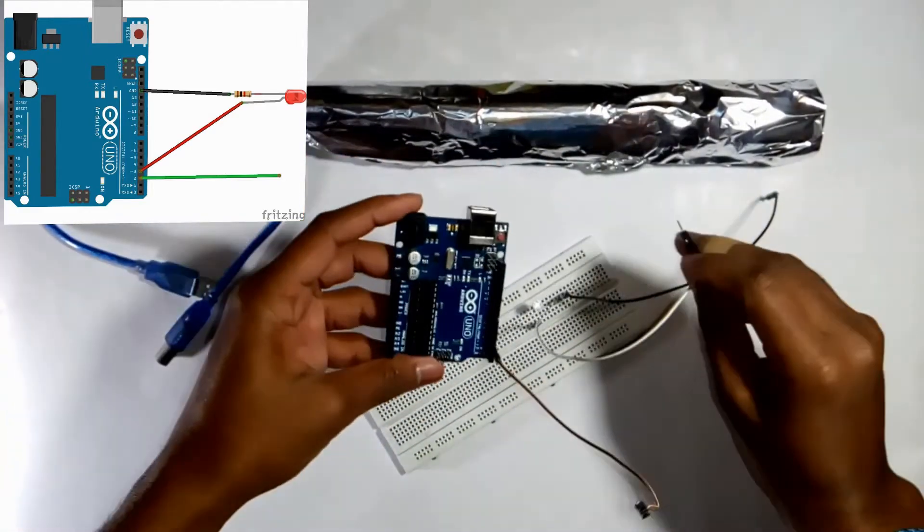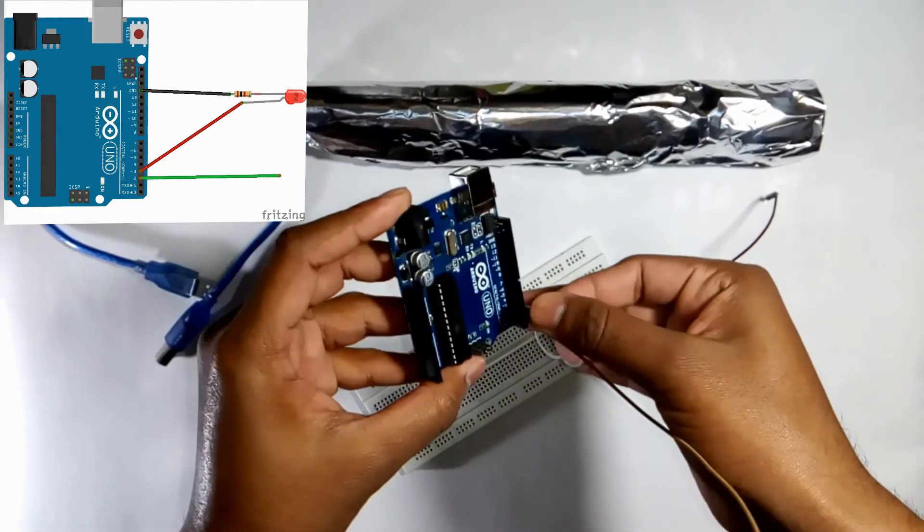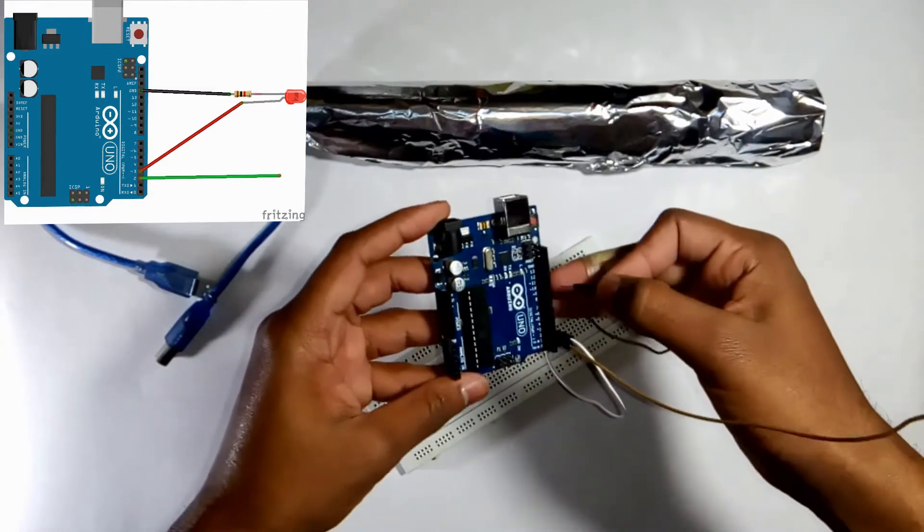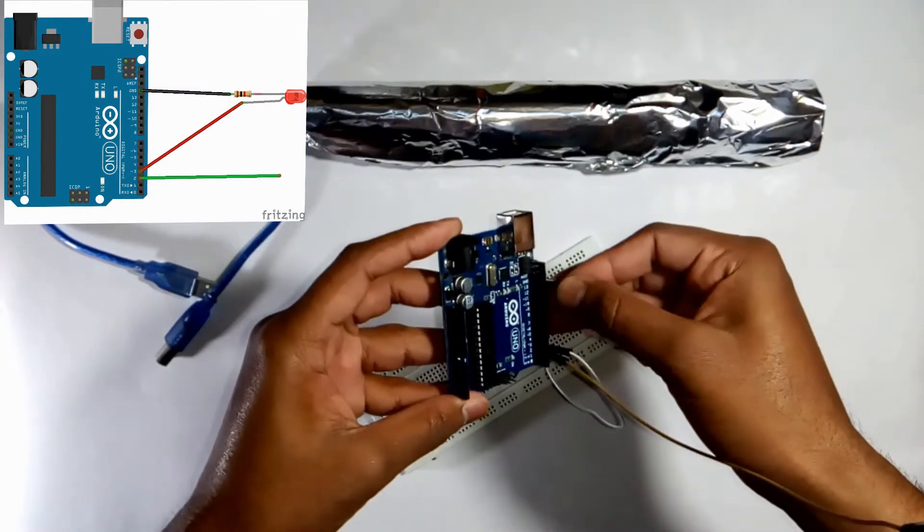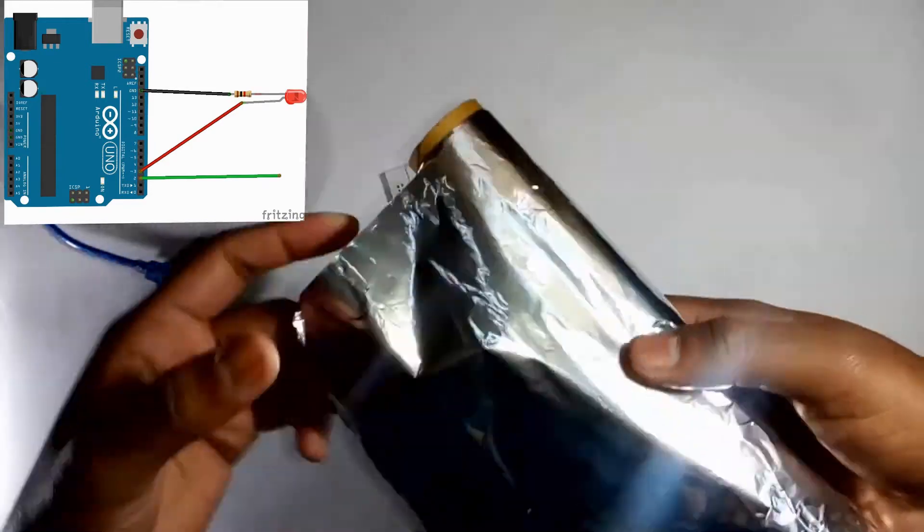And positive terminal of LED connected to the pin number 3 as shown in the connection diagram, and black wire connected to the ground pin like this. Now take a foil.